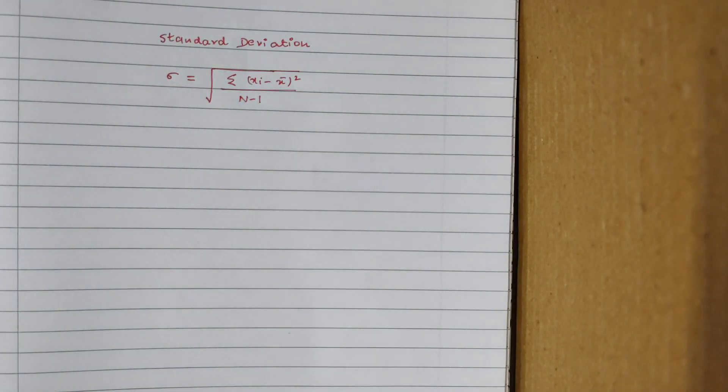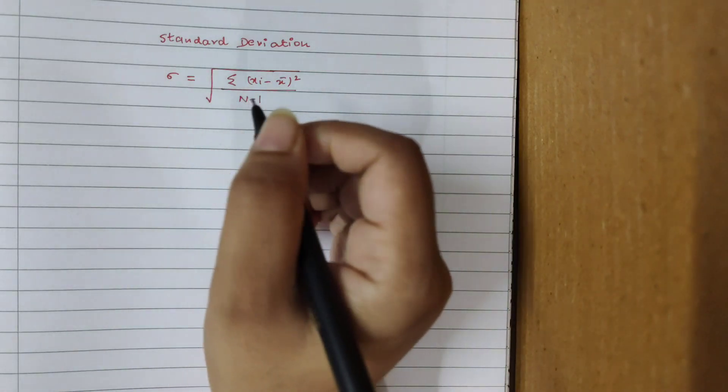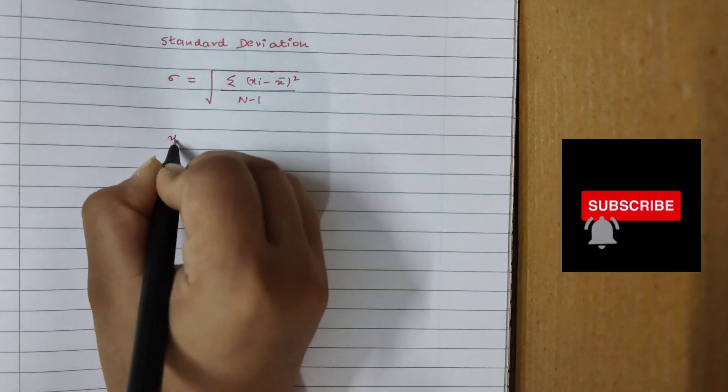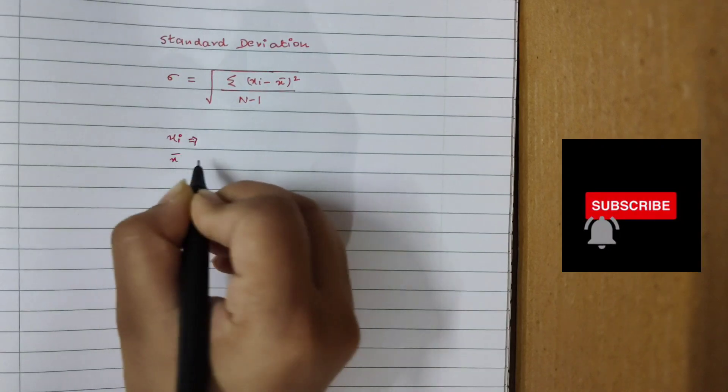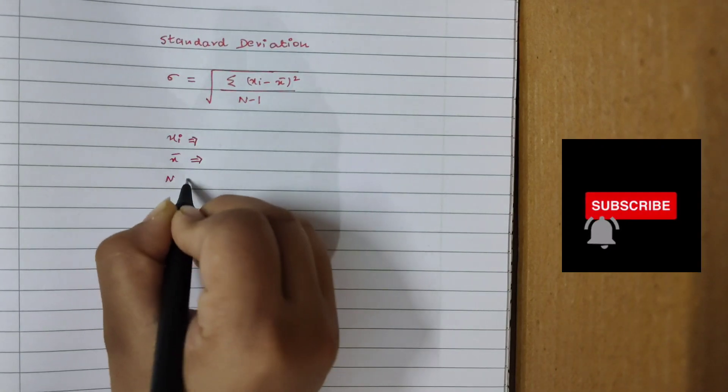This is the formula you need to learn by heart first. Next, we need to know what are the terms: we have the term xi, we have the term x bar, and we have the term capital n.